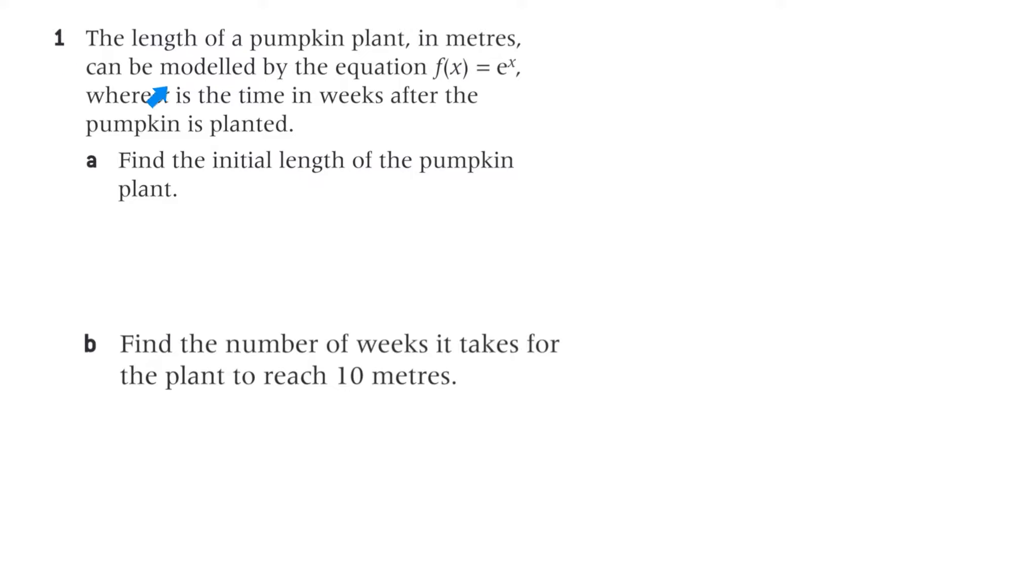Question 1: the length of a pumpkin plant in metres can be modelled by this equation where x is the time in weeks after the pumpkin is planted. Part a, find the initial length of the pumpkin plant. Well, the initial length is when x, the time in weeks, is 0. So that function is e to the power of 0, which is 1. The initial length is 1 metre.